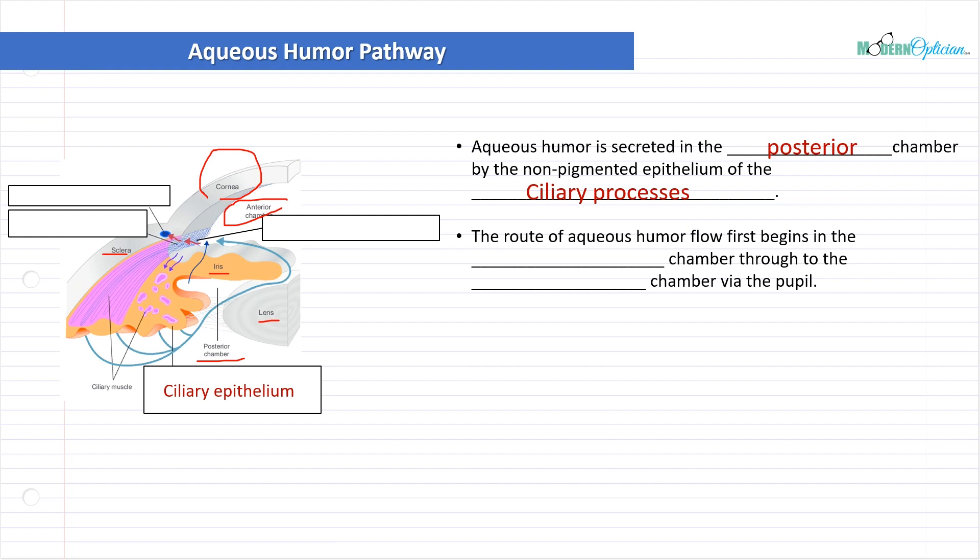Now the route of aqueous humor flow first begins in the posterior chamber and then it moves its way through to the anterior chamber via the pupil. You'll notice here in the diagram these blue lines, right there, and it kind of worked their way all the way through. This is the flow that we're going to follow.